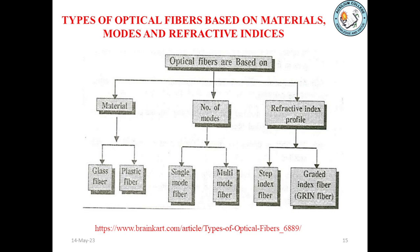Types of optical fibers based on materials, modes, and refractive indices. Optical fibers are classified based on the material they are made of — glass fiber and plastic fiber; based on number of modes — single mode fiber and multi-mode fiber; and based on refractive index profile — step index fiber and graded index fiber. In step index fiber, we have single mode and multi-mode step index fiber. In graded index fiber, we have only multi-mode graded index fiber.